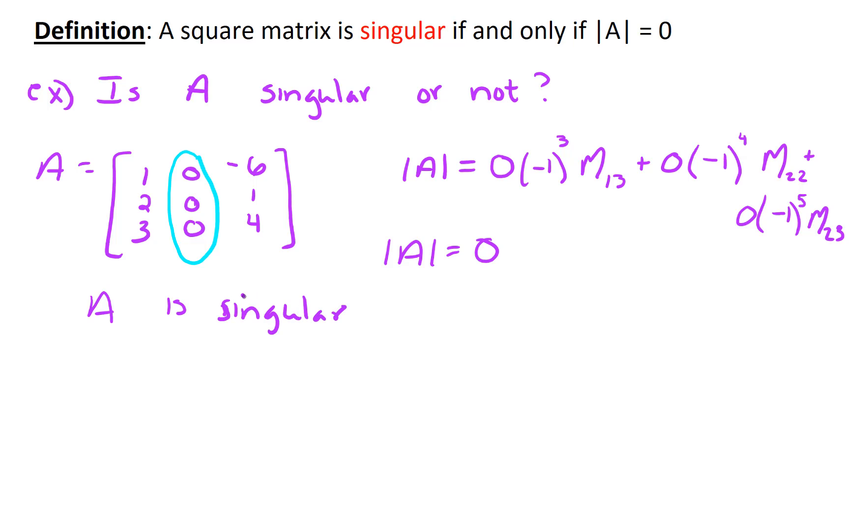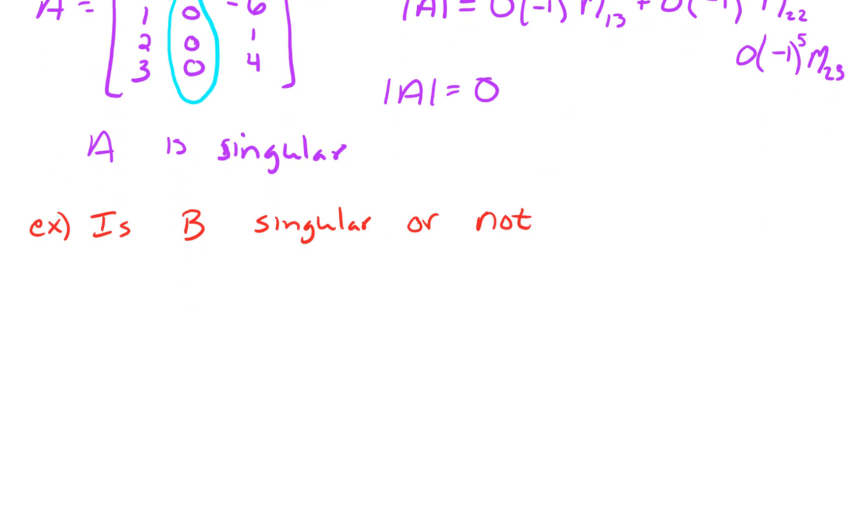So for our next matrix, let's take a look at the following. Suppose we have a different matrix B. Is B singular or not? And for this matrix, let's let B be 3 by 3. First row is 1, 2, 3. Second row, 2, 4, 6. And 1, negative 1, 5.